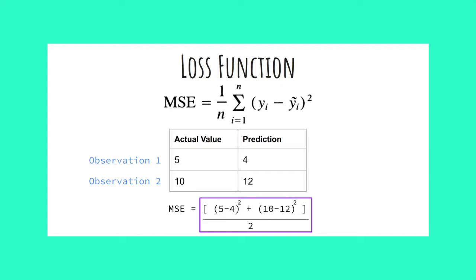Notice in the numerator, we have 5 minus 4, representing the error of the first observation, and 10 minus 12, representing the error of the second observation. We square both of these numbers to get rid of any negative values. In the denominator, we divide by 2 because we have two observations and want to take the average.